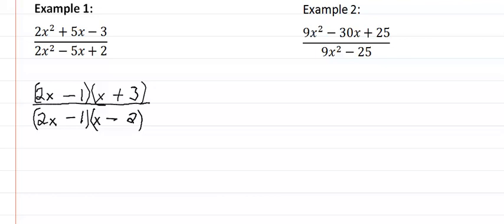Now we take out the common factor of two x minus one, and that leaves us with an answer of x plus three, all over x minus two.